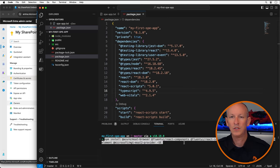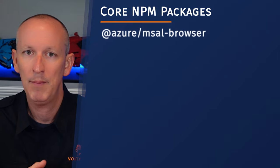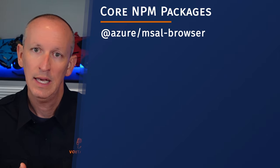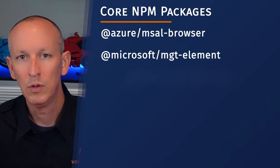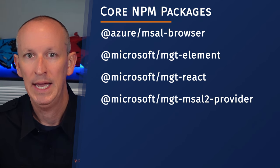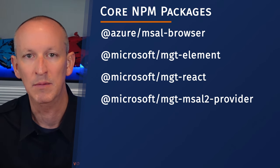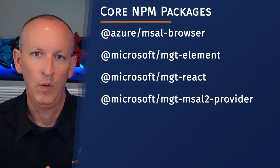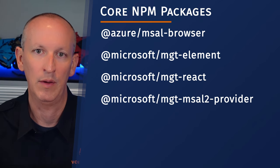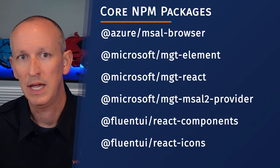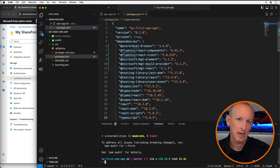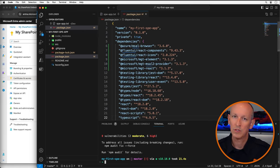I'll open the package.json file and run a command to install a bunch of packages for the SPA app. These include the Azure MSAL package for authenticating with Microsoft Entra ID, and several Microsoft Graph Toolkit packages: the Element package, the React package, and the MSAL2 Provider package. These contain UI components for React and for authenticating with the Microsoft Authentication Library provider for Microsoft Graph. I'm also installing the React components and icons packages from the Fluent UI v9 library. Next, I'll add the necessary scaffolding for the Web API server by running commands to install production dependencies and dev dependencies.